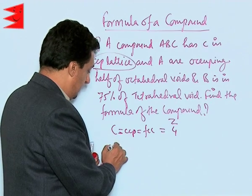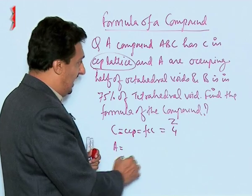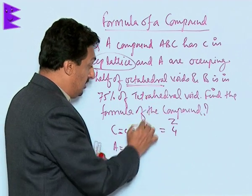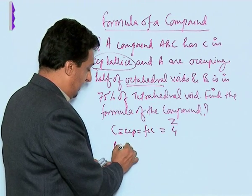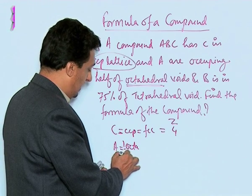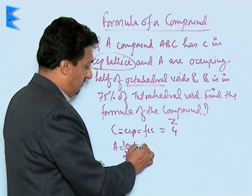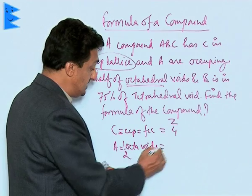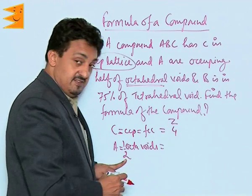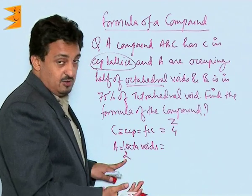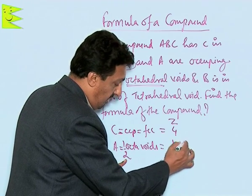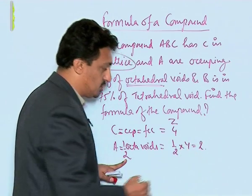Now let us move to A. A is in the octahedral voids — specifically half of the octahedral voids. We know how many octahedral voids are there in an FCC unit cell: it is equal to Z, which is 4. So it is half of 4, which makes the number of A atoms equal to 2.